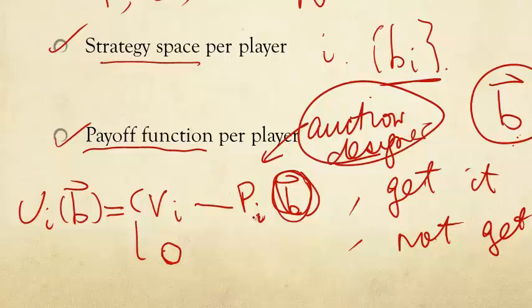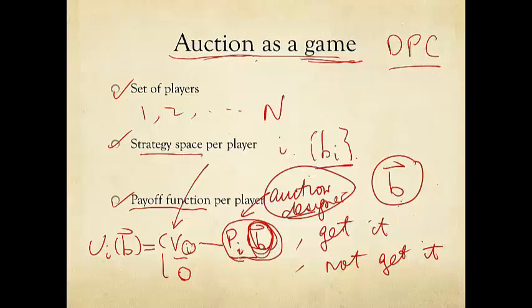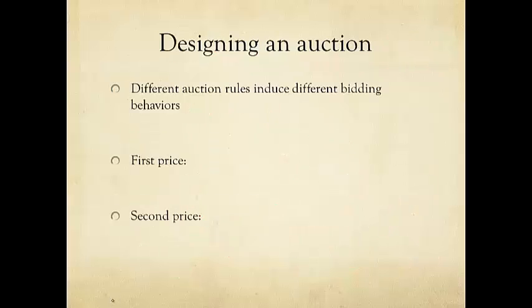Now, vi minus pi could be positive, could be negative, could be zero. We don't know. Depends on what is the valuation and what is the price. Again, valuation is assumed to be private, no one knows, and independent. Doesn't depend on anyone else. But the price clearly depends on others' behavior, the others' bidding behavior. And what is interesting is that by deciding a different function that maps this bidding behavior to price, you will in turn induce different bidding behavior. Different auction rules will induce different bidding strategies in this auction game.